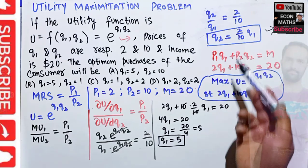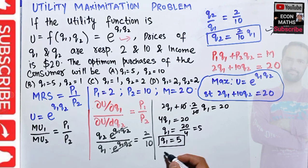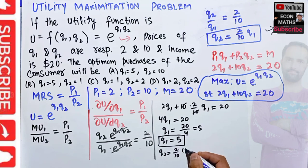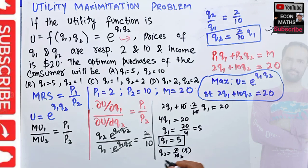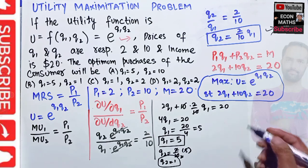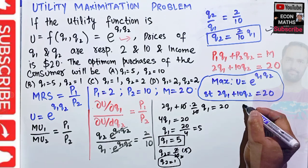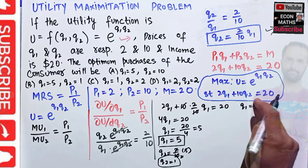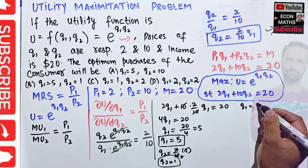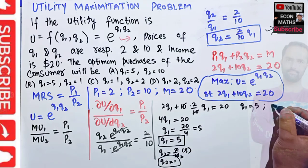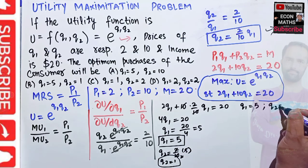To find q2, plug q1 = 5 into q2 = (2/10)*q1: q2 = (2/10)*5 = 10/10 = 1. So the optimal combination is 5 units of q1 and 1 unit of q2.